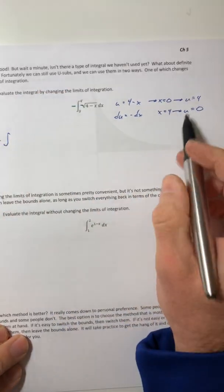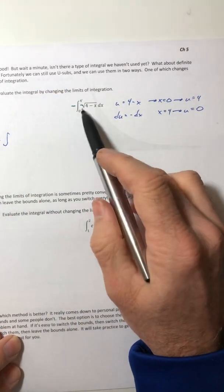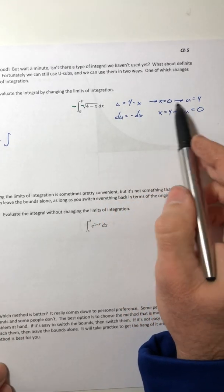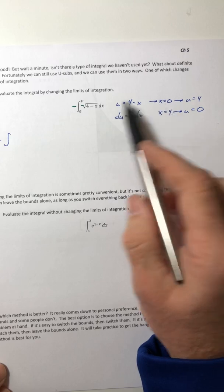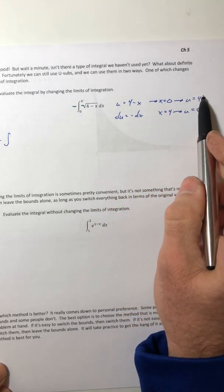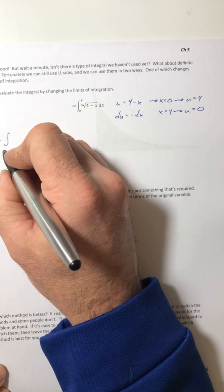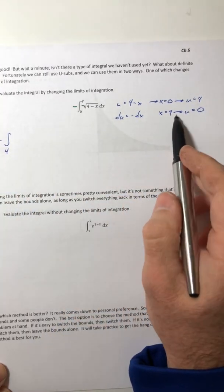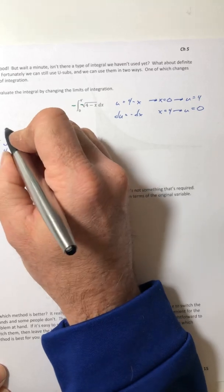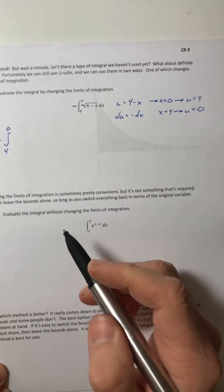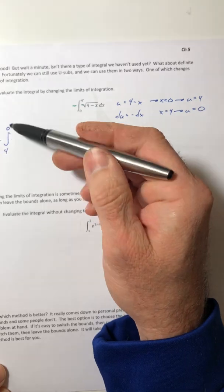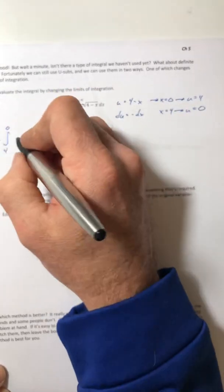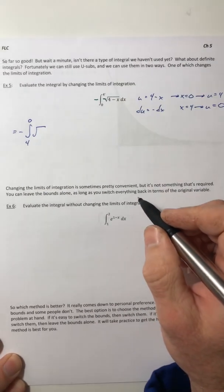So these are the new bounds and you want to keep them in the same order. So x equals 0, that was the lower bound, so whatever you end up with for its answer for u is still the lower bound. The 0 that came from when x was 4 is the upper, so the 0 is now the upper. So even if it's out of order, don't worry about it, just keep going with it. It will work out.